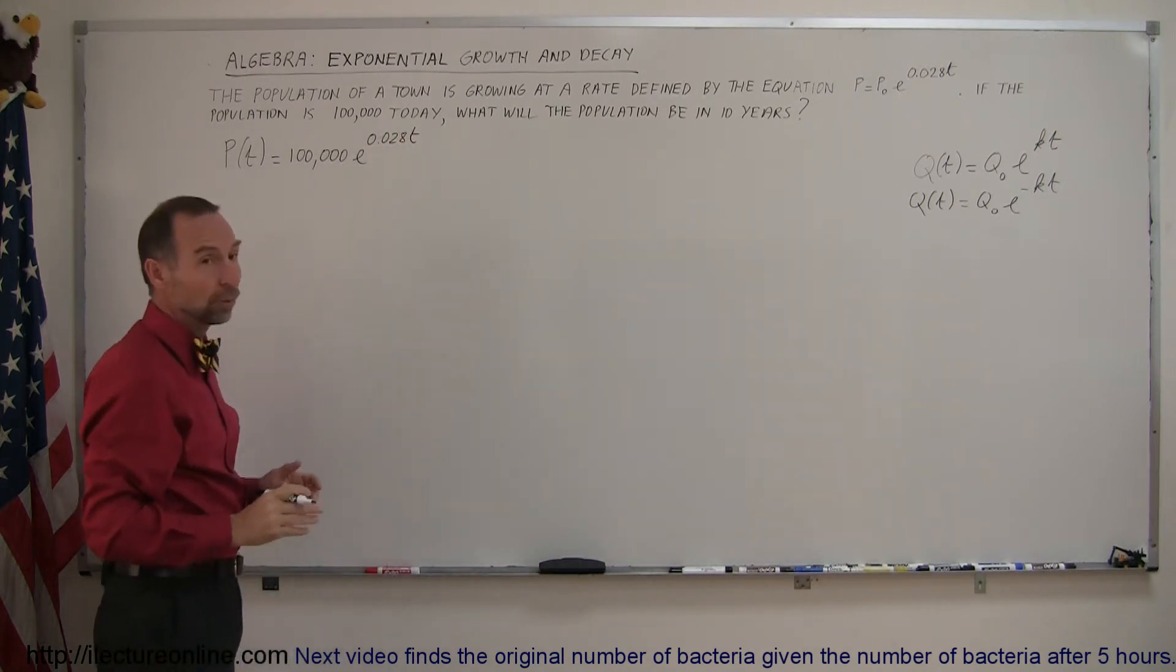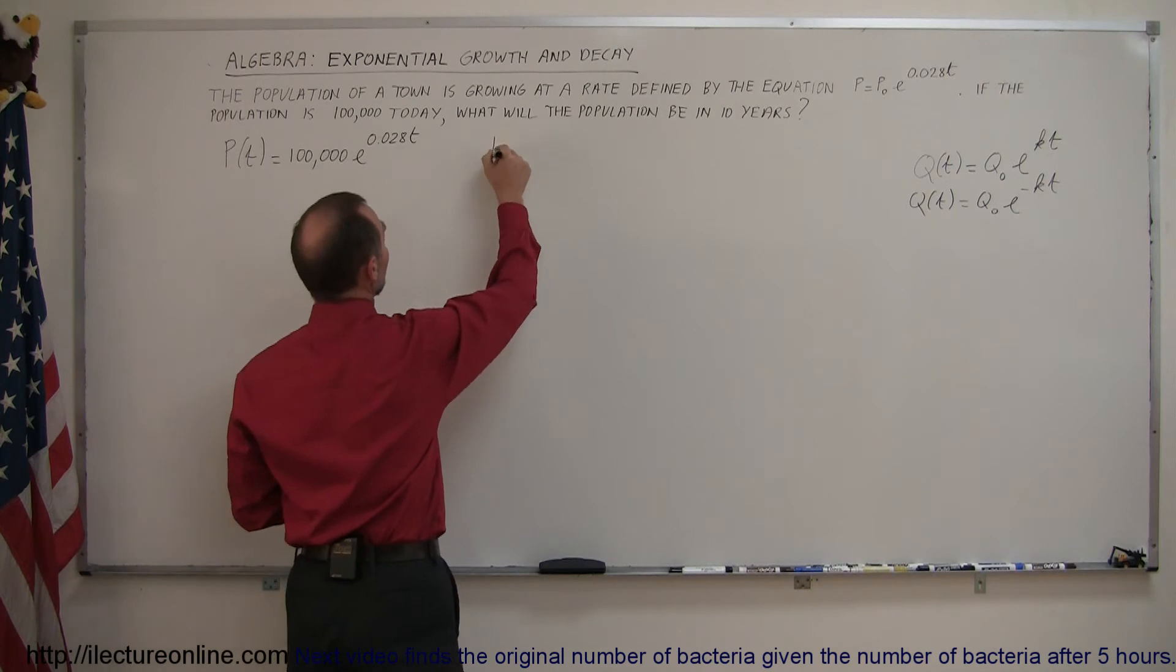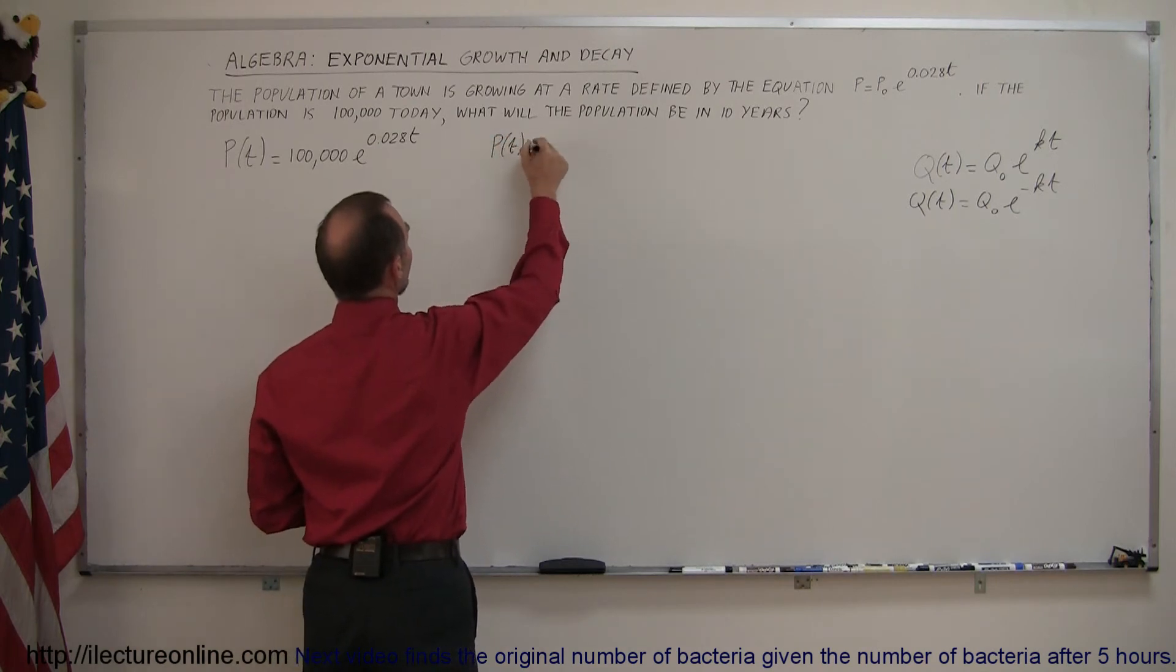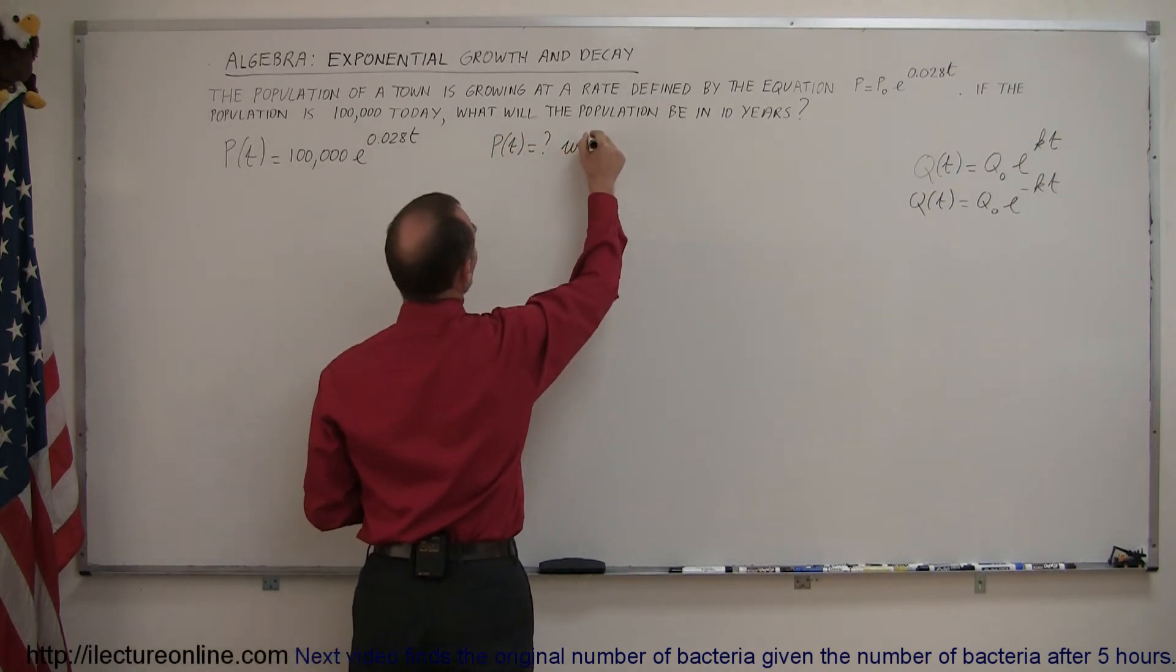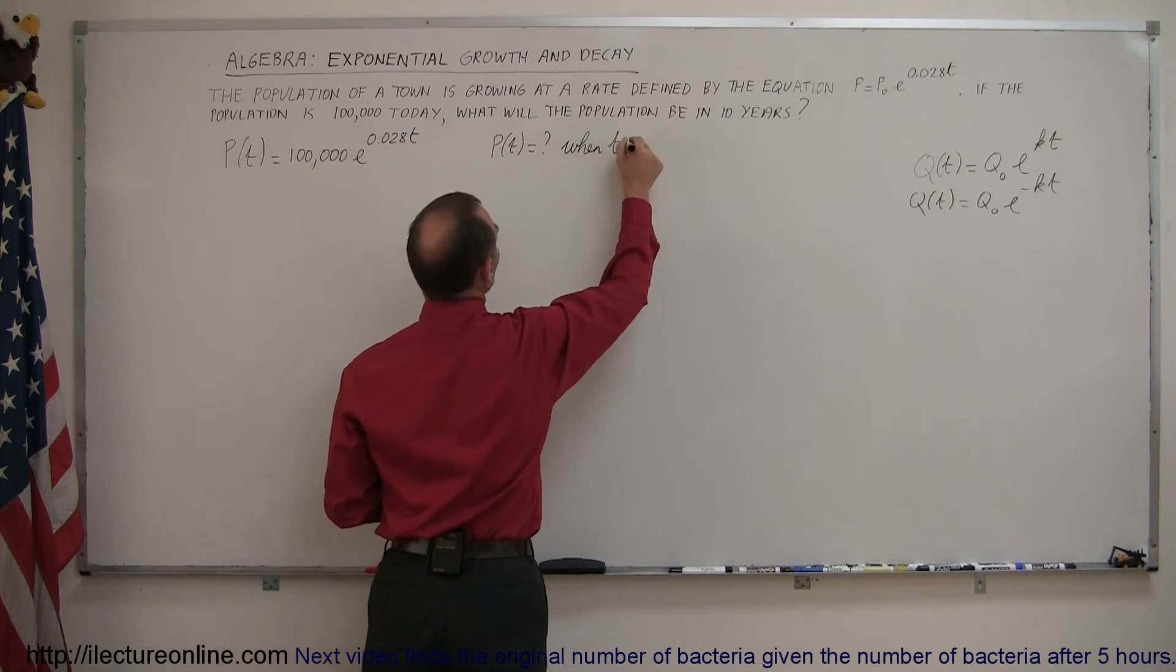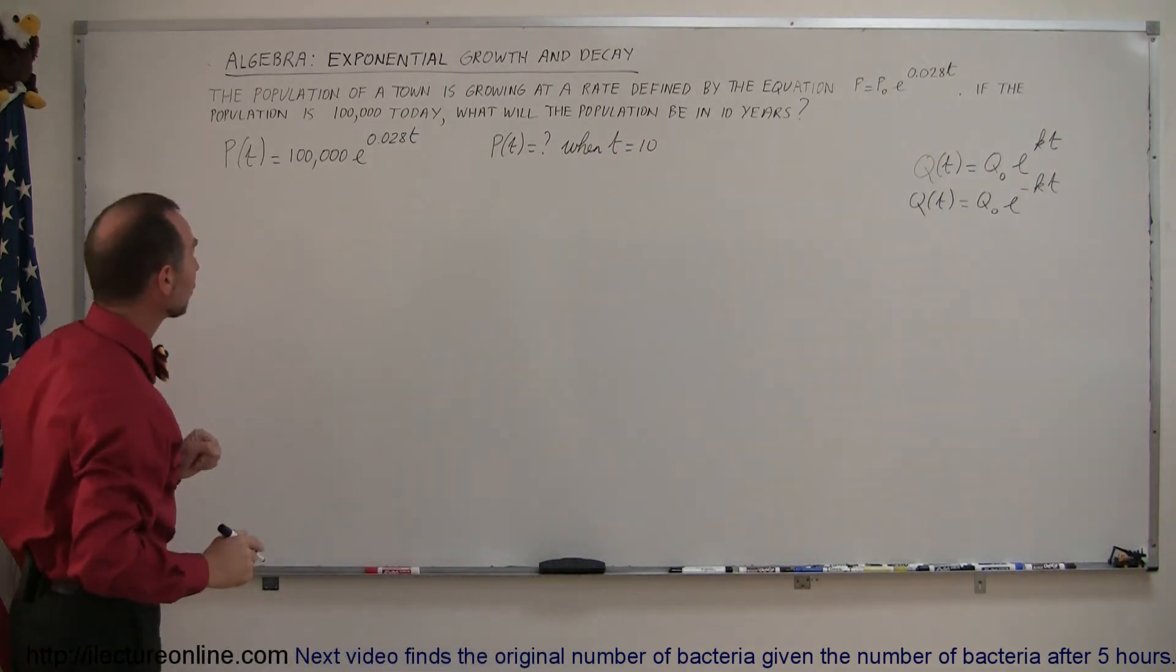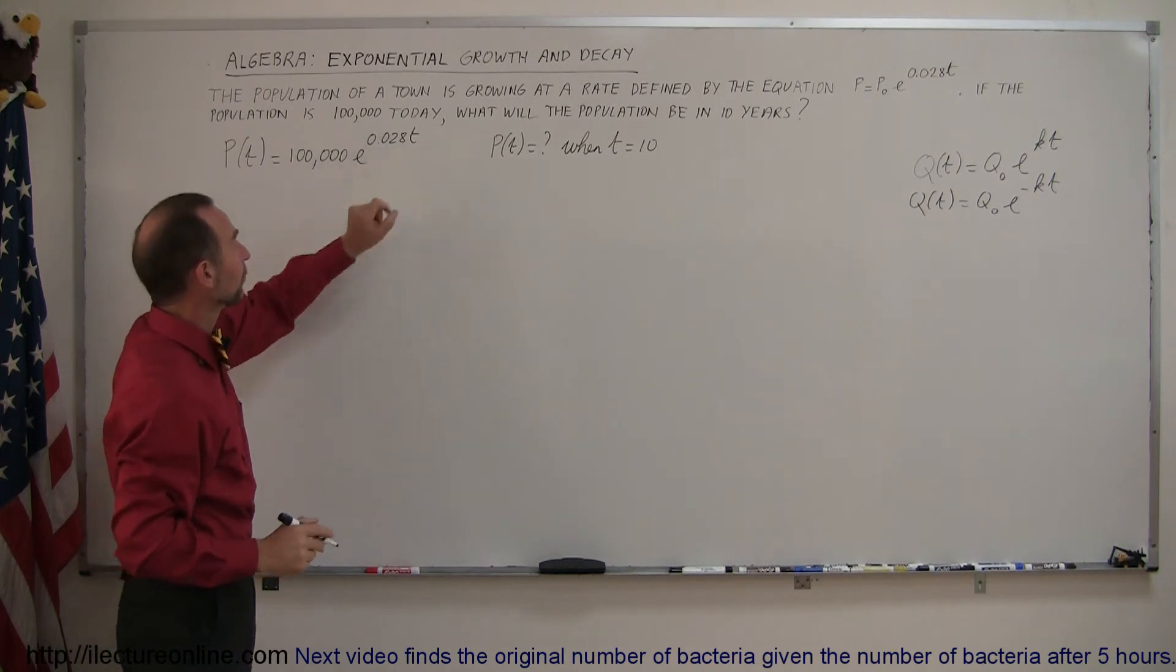So really what they're asking for is what is the population in the future, p as a function of time, when the time elapsed equals 10 years. All right, let's plug that into our equation. We plug in 10 for t.